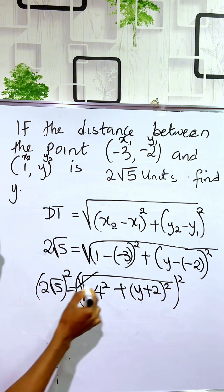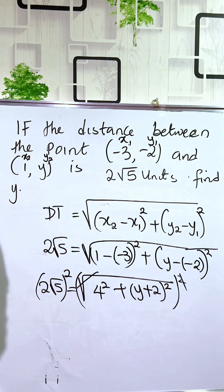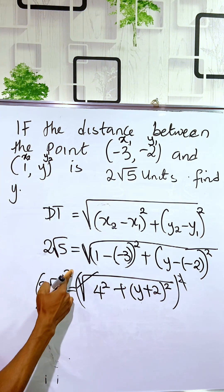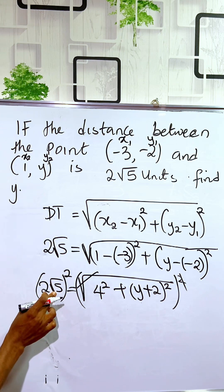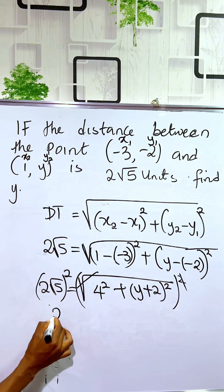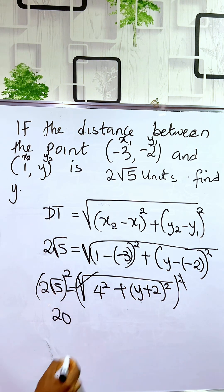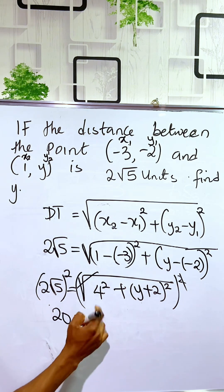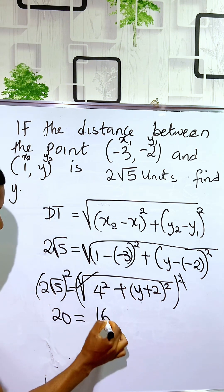So if we square, you see that the square root will be reduced. So we are having it to be 2 squared is 4, square root of this becomes 5, and this gives us 20. And this is equal to 4 squared is 16 plus...